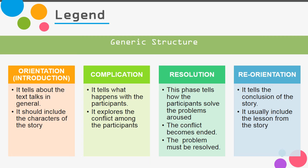Now let's talk about the generic structure of legend. Legend is a kind of narrative text. The generic structure of legend or narrative text is: orientation, complication, resolution, and reorientation. The first part is orientation, or introduction.